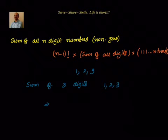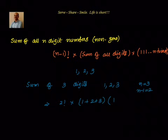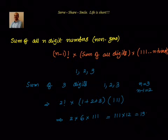Here n equals 3, therefore n minus 1 equals 2. So it is factorial 2, into sum of all digits (1 + 2 + 3), into 1, 1, 1 (n times = 3 times). That is equal to 2 into 6 into 111, which equals 1332.